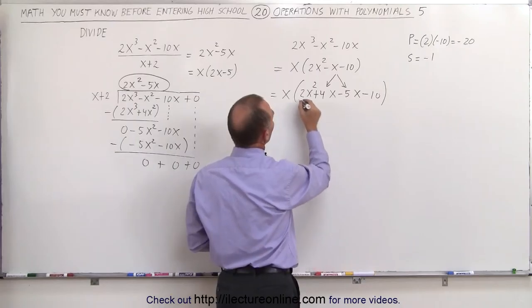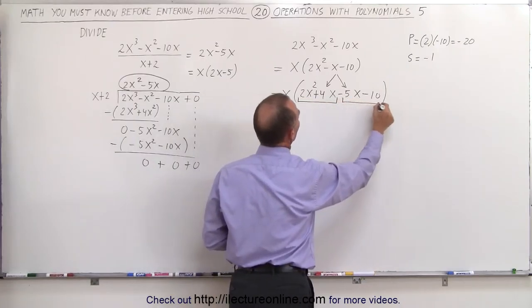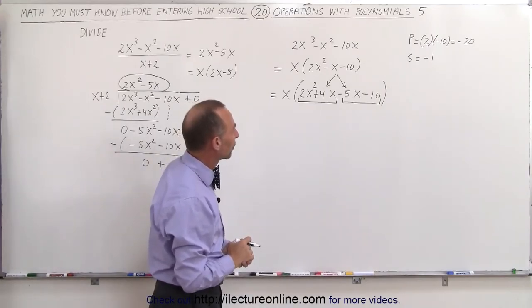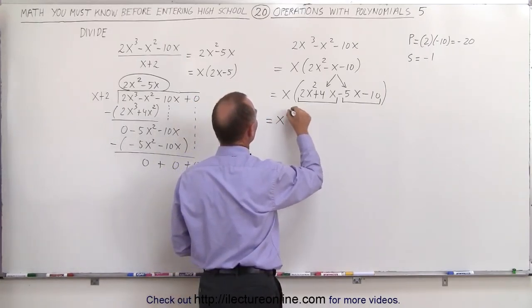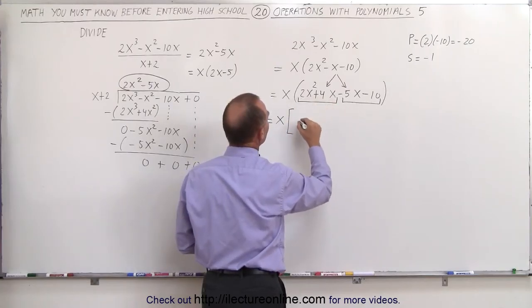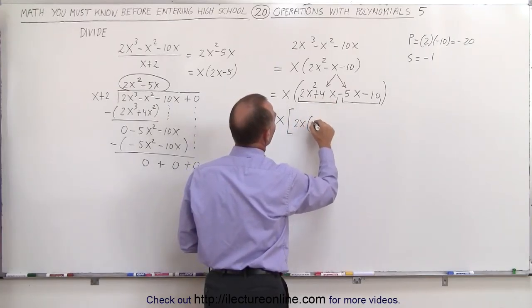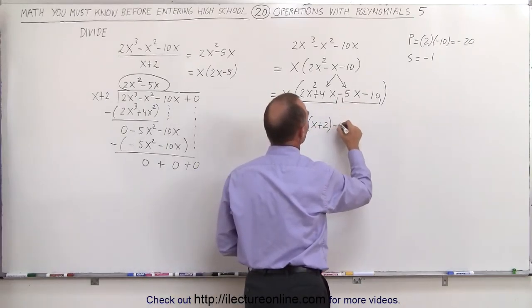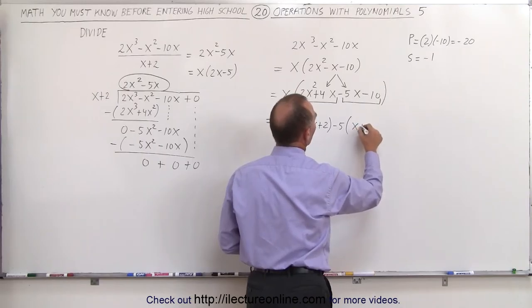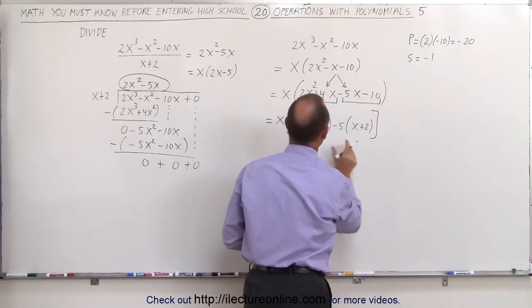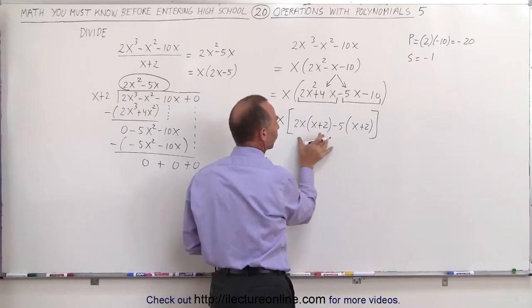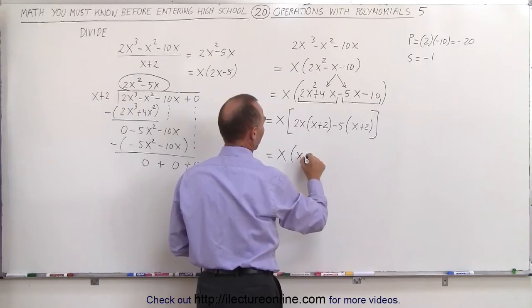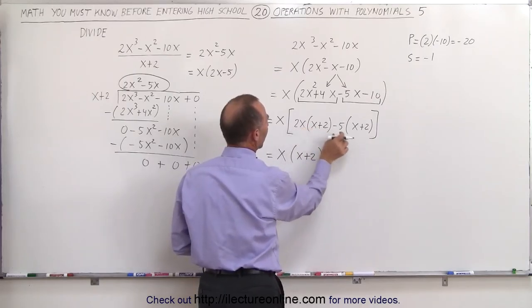Now what I'm going to do is I'm going to group these two together. Here's a group of 2, and there's a group of 2. What is common in each of those two groups? Well, I can say that this is equal to x times. What's common here would be a 2x, and I'm left with an x plus 2. And here I can factor out a minus 5, and I'm left with an x plus 2. Now, from these two terms right here, I can see that an x plus 2 is common. So I can say this is written as x times x plus 2, and I'm left with a 2x minus 5.